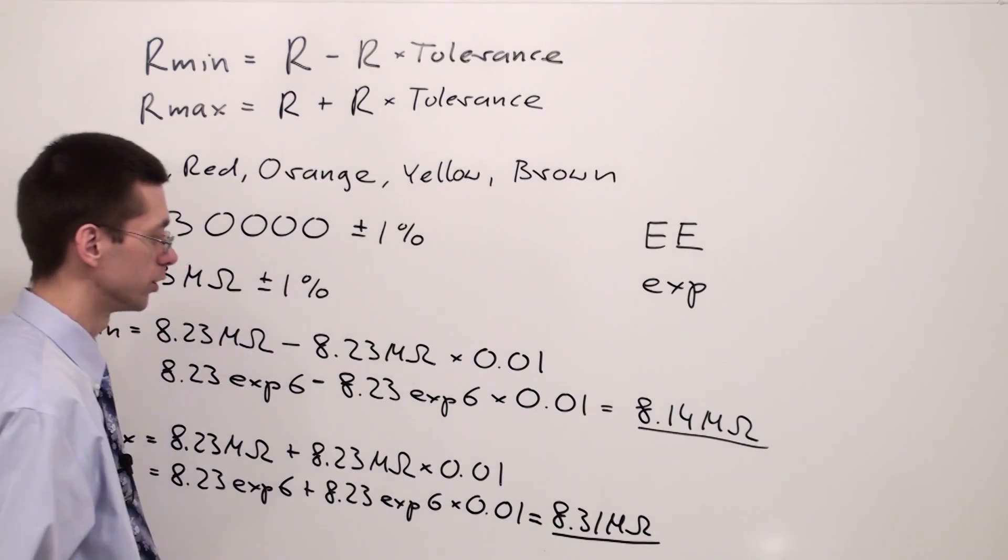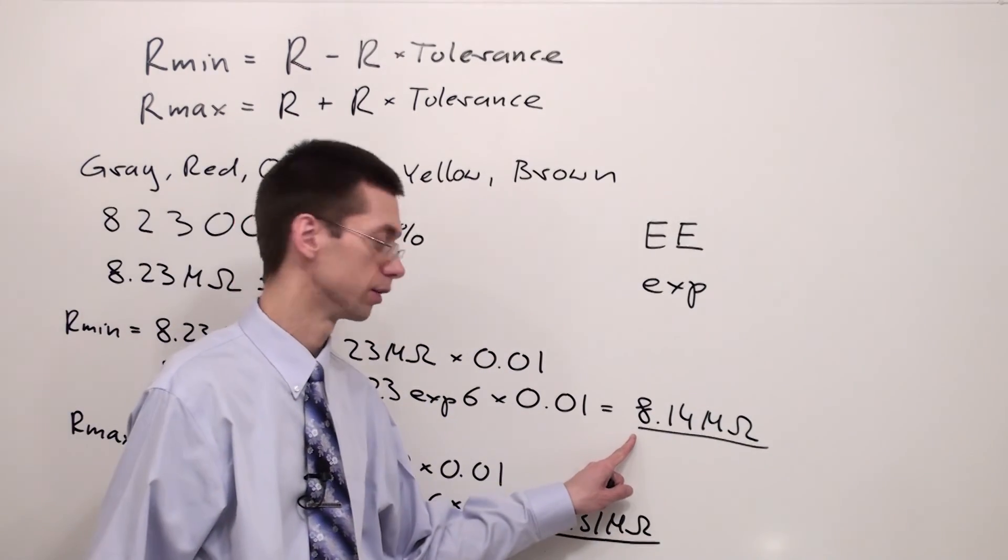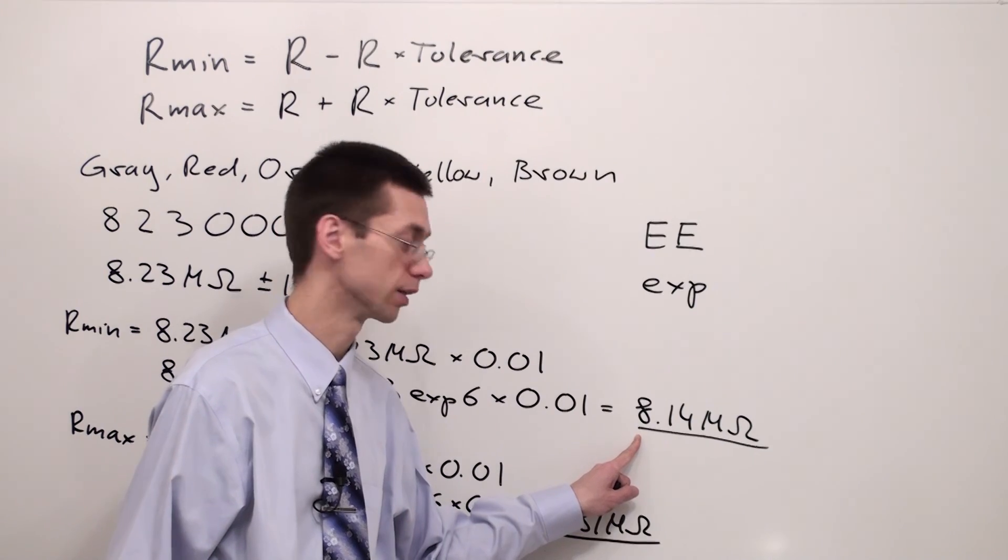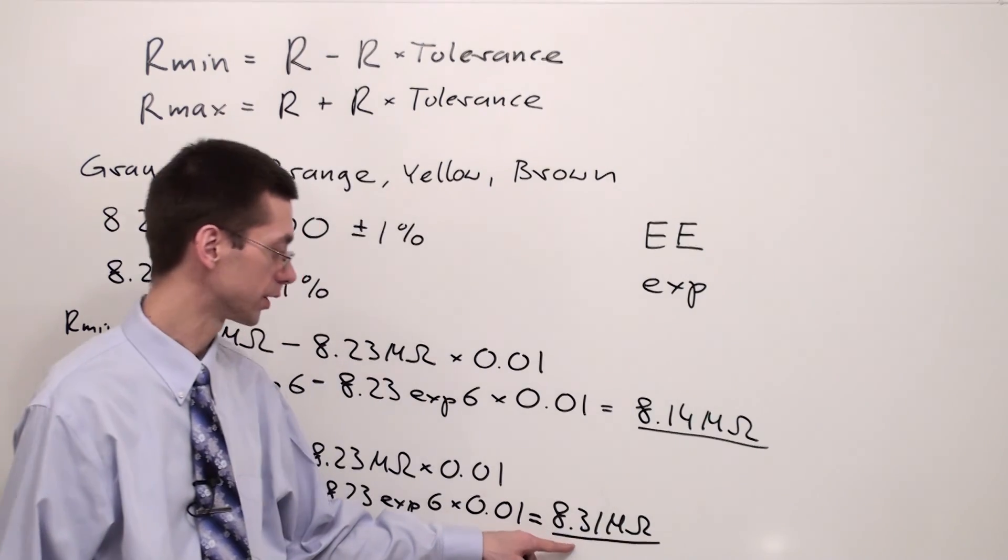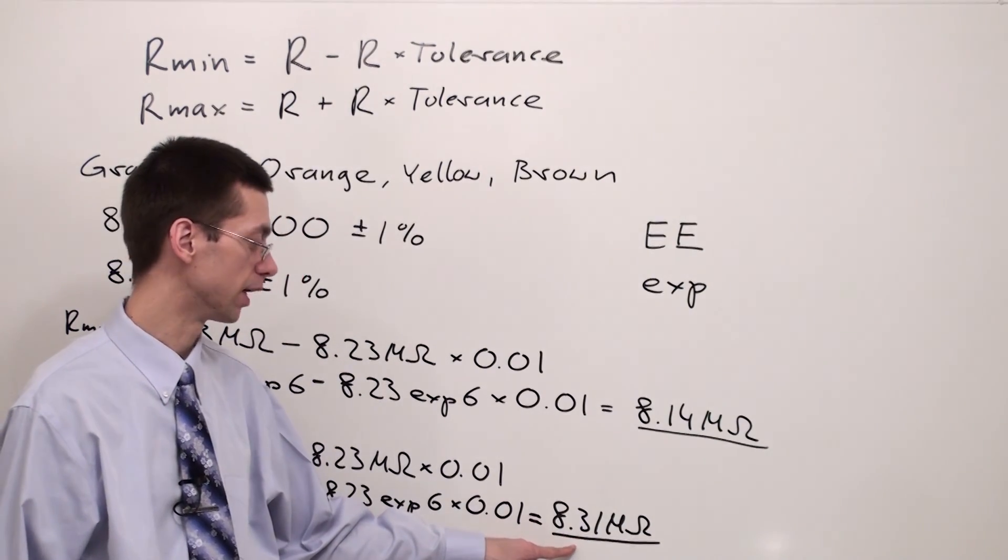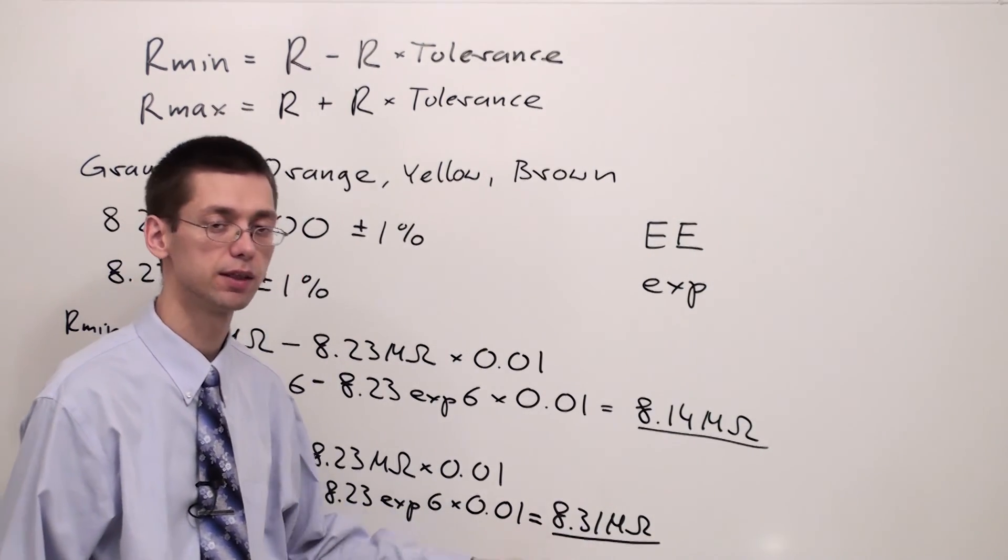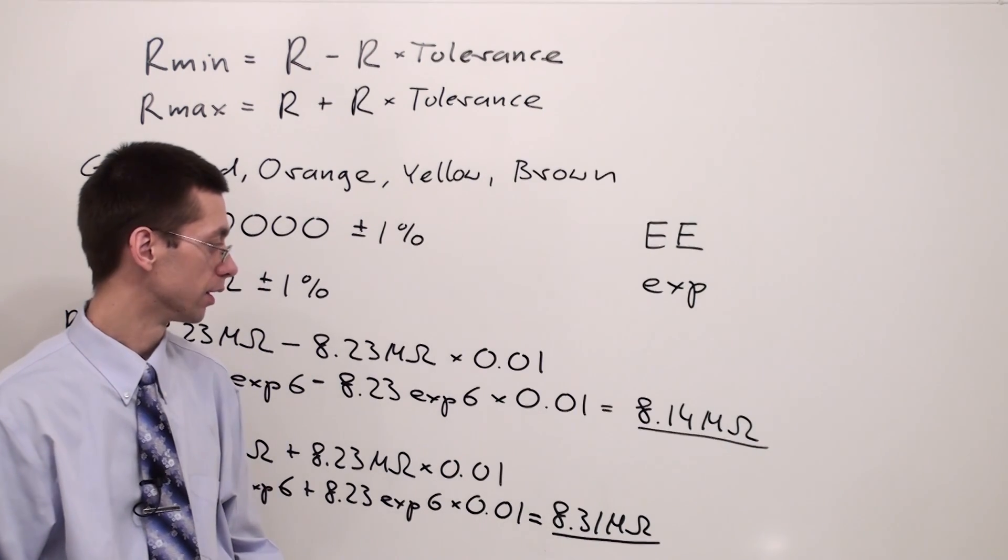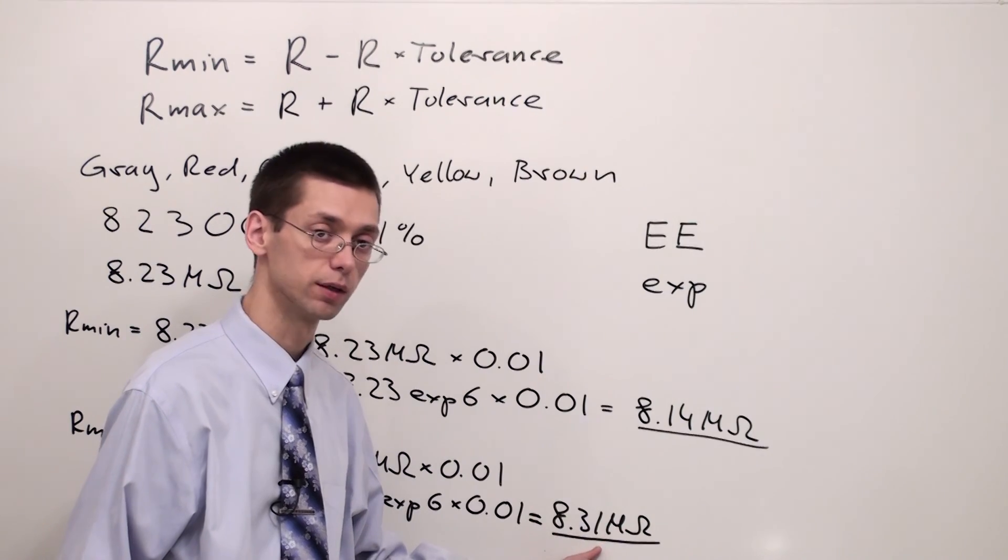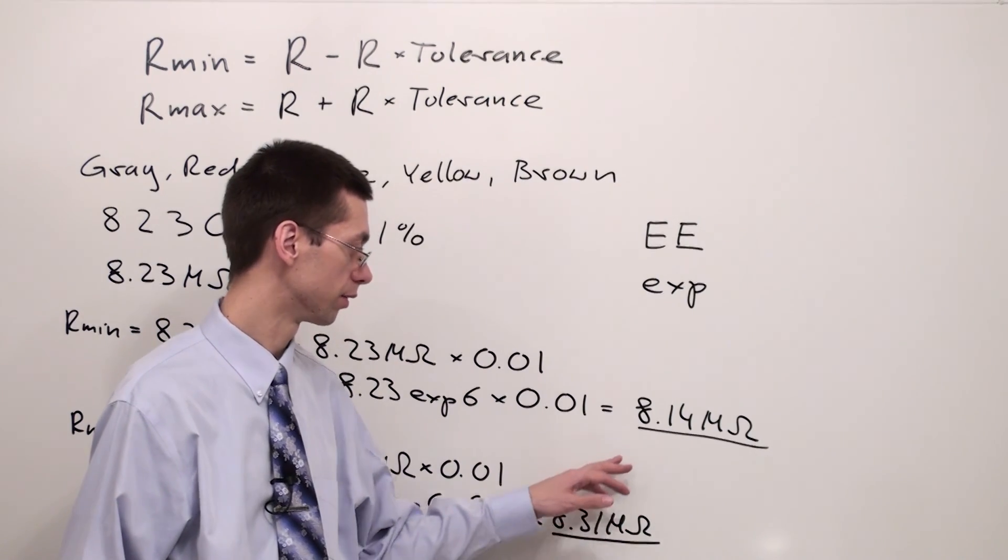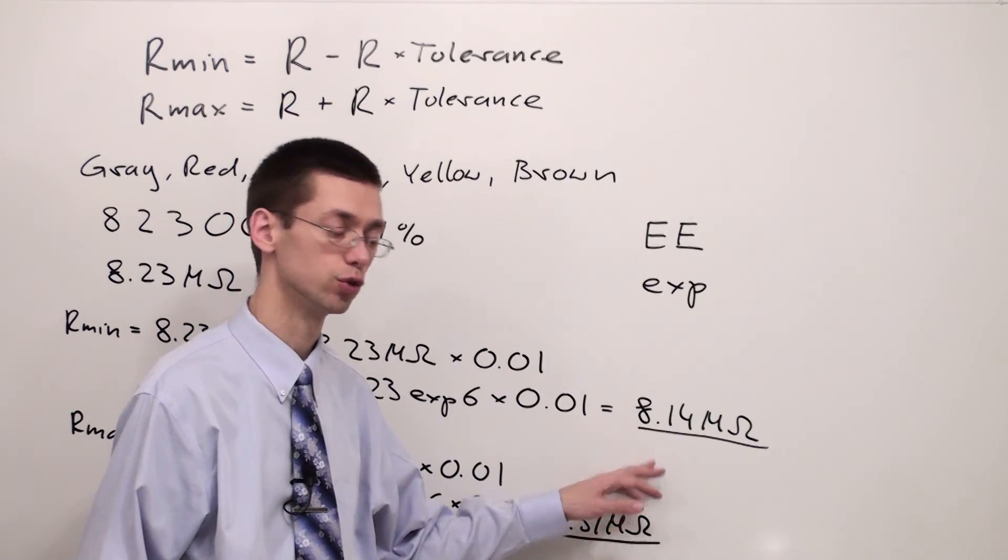So this is the minimum value of my resistance - the possible minimum value of the resistance - and this is the possible maximum value of my resistance. But it doesn't mean that my resistance has this value or this one. The resistance can have any value between these two.